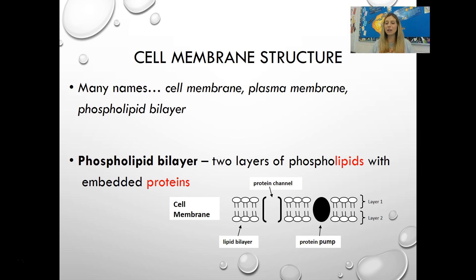The cell membrane goes by many names. Sometimes you'll hear it called the cell membrane, sometimes the plasma membrane, sometimes the phospholipid bilayer — they all mean the same structure. The overall structure of a cell membrane is described as a phospholipid bilayer, meaning two layers of phospholipids, and there are embedded proteins within the phospholipid layer. That is the overall structure: a phospholipid bilayer with embedded proteins.